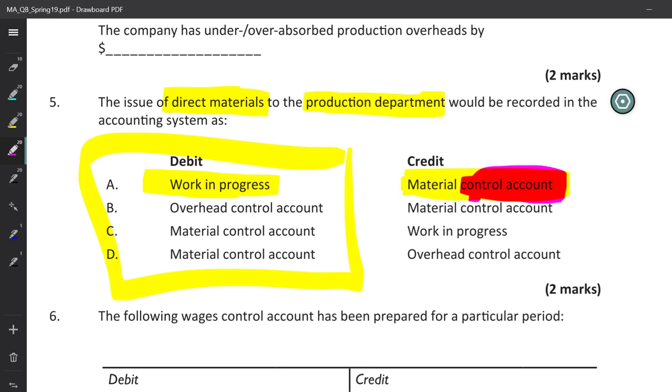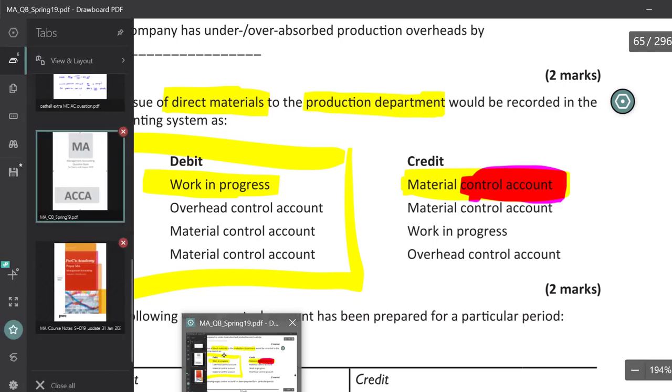There you go. That is the secret to the cost accounting debits, credits, and t-accounts. And you might not even see a question on this in your exam. And if you do, 99% of the time, you can solve it with the sketch that I just showed you right here.